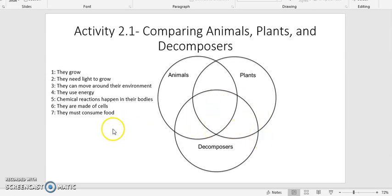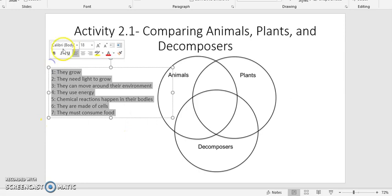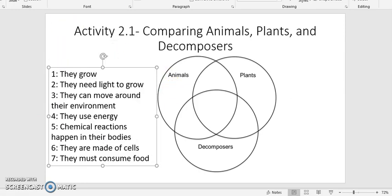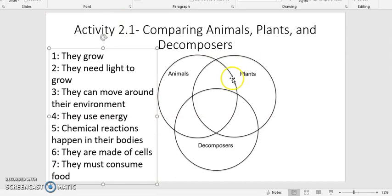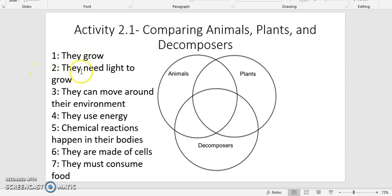And what we're going to include in this triple Venn diagram are these seven characteristics. So let me actually make these a little bigger for you. The characteristics of these organisms are going to include: they grow, they need light in order to grow, they can move around their environment, they use energy, chemical reactions happen in their bodies, they're made of cells, and they must consume food. Now these are a little bit different than the ones that we talked about in class. I reworded these a little bit, just to make them a little bit clearer.